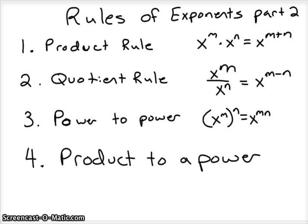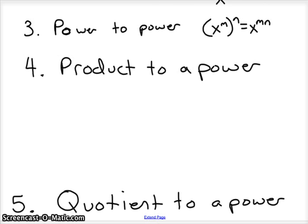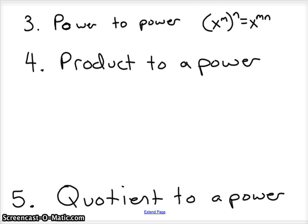The rest of the rules are derived from those first three. The next one is product to power. Product to power is pretty simple if you understand the first three.